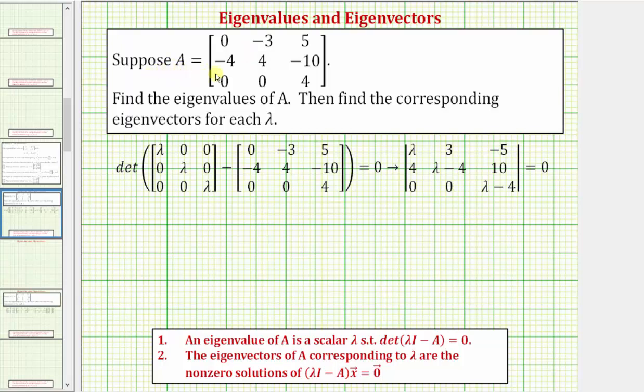We're given matrix A, which is a three by three matrix. We're asked to find the eigenvalues of matrix A, and then find the corresponding eigenvectors for each lambda.